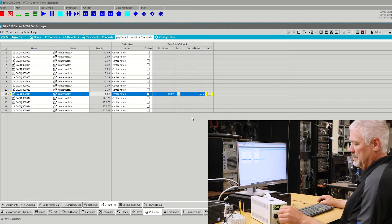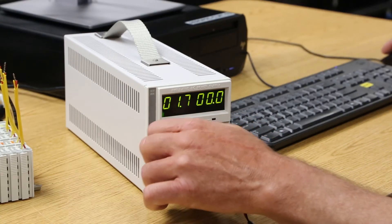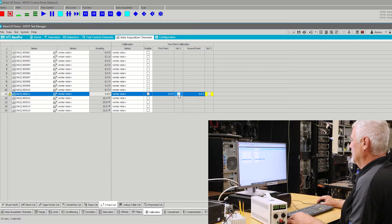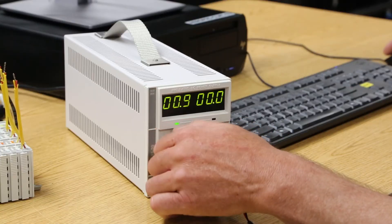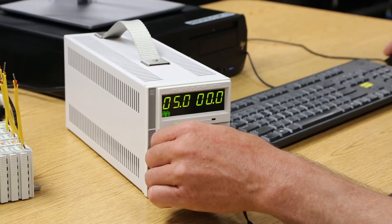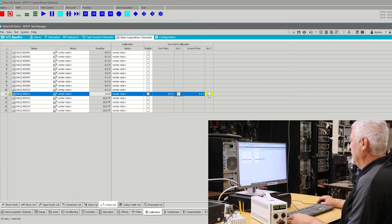At this point, I need to adjust the input to the first point, zero volts, set the point. Now I will set point two by adjusting the input to five volts and applying the second point. At this point, the input is calibrated.